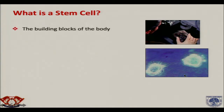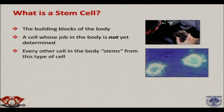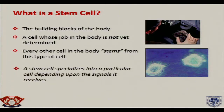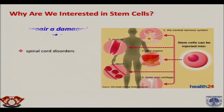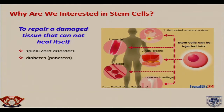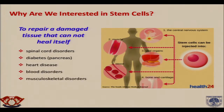What is a stem cell? It is a kind of building block of the body — a cell whose job in the body is not yet determined. Every other cell in the body stems from this type of cell. A stem cell specializes into a particular cell depending on the signals it receives. The stem cell can repair damaged tissue that cannot heal itself, such as spinal cord disorder, diabetes, heart disease, and musculoskeletal disorders including knee osteoarthritis and neurological disorders.